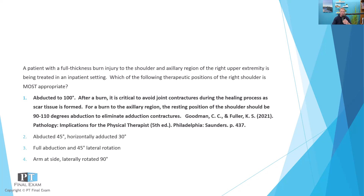These other options that are incorrect: abducted 45 with horizontal adduction 30 degrees is the open pack position of the shoulder. However, we're not talking about a capsular issue — with this burn or integumentary issue, we're obviously talking about skin and skin contractures that can result in a decrease in range of motion. The other incorrect answers — full abduction with 45 degrees external rotation, or the arm at side with external rotation to 90 — both don't adequately describe the abduction required for someone with an axillary burn.